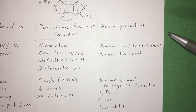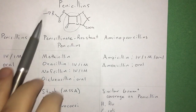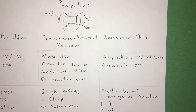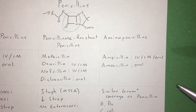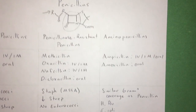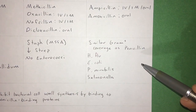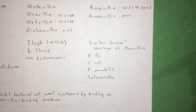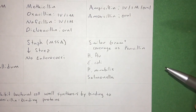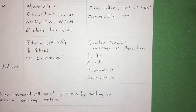And then finally, the aminopenicillins, which again is just another change in the R group. This is ampicillin and amoxicillin. Amoxicillin is oral and it has a suspension. They have similar gram-positive coverage as penicillin, and now we're able to hit some gram-negatives including H. flu, E. coli, P. mirabilis, and Salmonella.